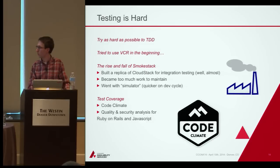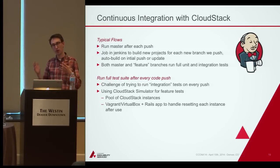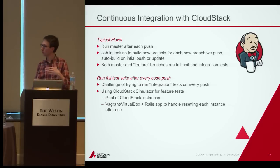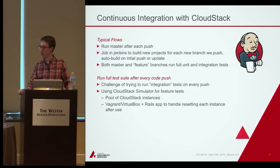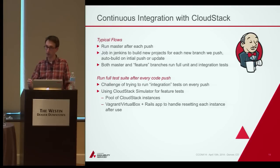We're also using Code Climate for code quality and security analysis — it grades our code and tracks test coverage. For continuous integration we use Jenkins, running tests after each push on branches and master. The challenge with the simulator was managing instances: one per developer? A shared pool? We settled on a pool of CloudStack instances that tests can check out and check back in. We use a bare metal box with Vagrant and VirtualBox, snapshotting each instance. When a test checks an instance back in, we reset to the snapshot — VirtualBox resets in seconds.